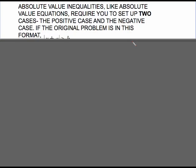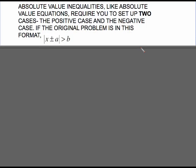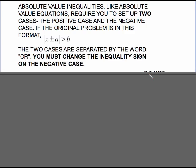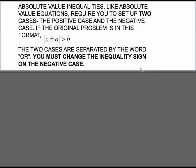So absolute value inequalities like absolute value equations require you to set up two cases. The positive case and the negative case. If the original problem is in this format, absolute value of x plus or minus some number greater than b, the two cases are separated by the word or and you must remember to change the inequality sign on the negative case. It is separated by the word or. One way to remember this is this is a greater than sign. So greater is going to get you the or. Now why is it the word or? It's because when you set up those two cases like I showed you on the last screen you can have one part of the number line work or the other part of the number line works.